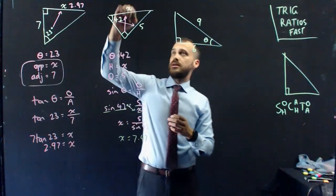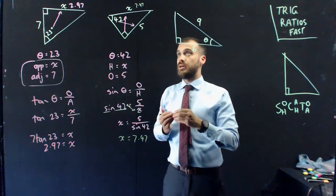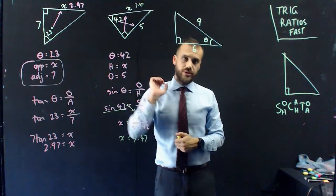Stop, think, does that make sense? If I put 7.47 there, it's a bit bigger than 5. If it's the hypotenuse, you'd expect that. That looks about right to me. Good, solved, done.